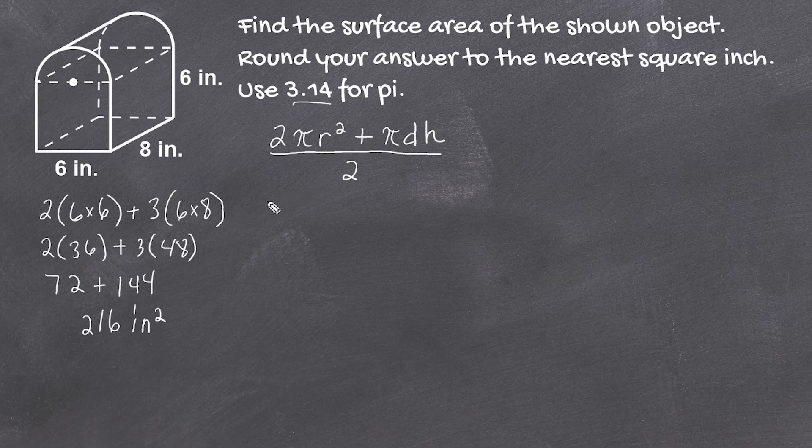So we take 2 times pi times radius. The radius is the distance from this point to the edge, and that's half of the square's length. Half of 6 is 3, so we have 3 squared. Plus pi times diameter, and the diameter is always double the radius, so we have 6.